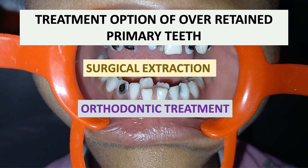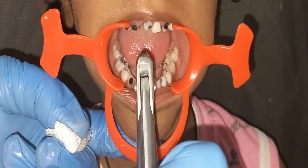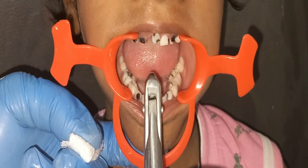The second indication is replacement: when complete root resorption has occurred and there is Grade 2 or Grade 3 mobility, the deciduous tooth needs to be removed.